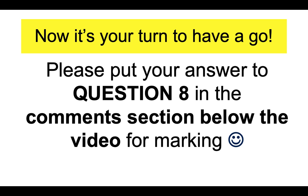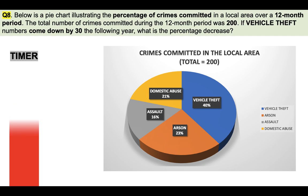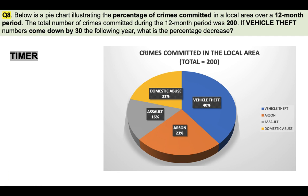So now it's your turn to have a go. Please put your answer to question 8 in the comments section below the video for marking. The question is: below is a pie chart illustrating the percentage of crimes committed in a local area over a 12-month period. The total number of crimes committed during that period was 200. If vehicle theft numbers come down by 30 the following year, what is the percentage decrease? Brilliant, well done. Let's move on to the next question.